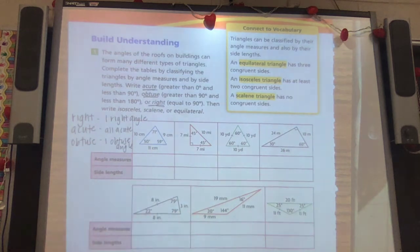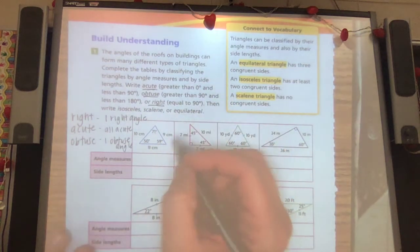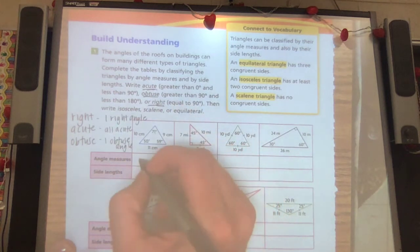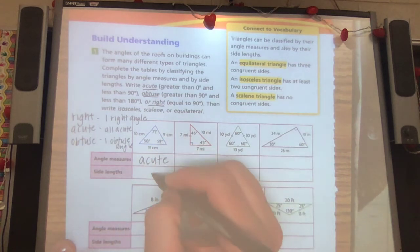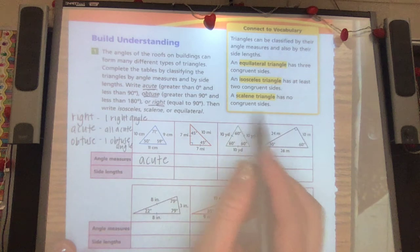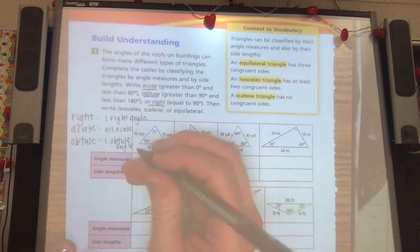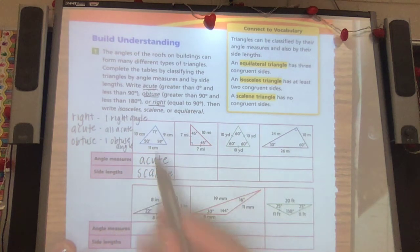So let's look at this one. Our angles are 71, 50, and 59. Since they are all less than 90, that's going to be an acute triangle. Let's look at its sides. 10, 11, 9. They're all different. No congruent sides. So we could say this is an acute scalene triangle.